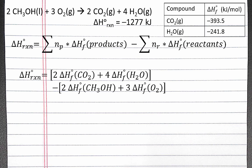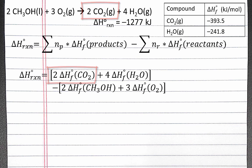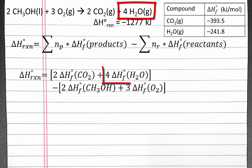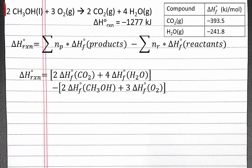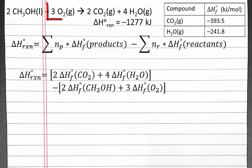For our reaction, the standard enthalpy of reaction equals two times the standard enthalpy of formation for CO₂, plus four times the standard enthalpy of formation for H₂O gas, subtract the quantity two times the standard enthalpy of formation for methanol — which is what we're solving for — plus three times the standard enthalpy of formation for oxygen gas.